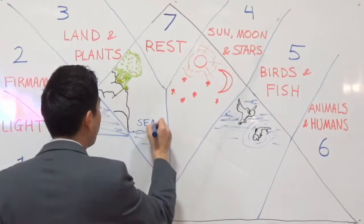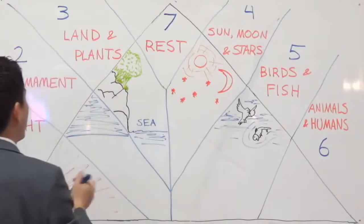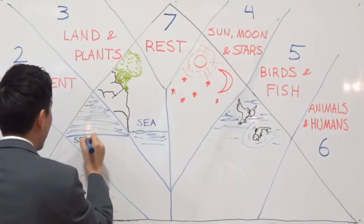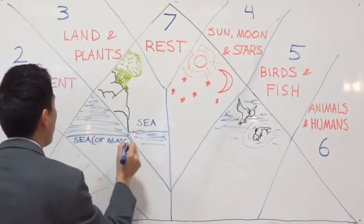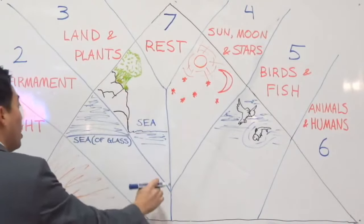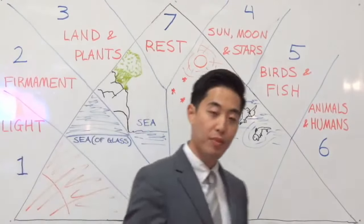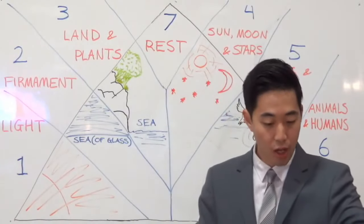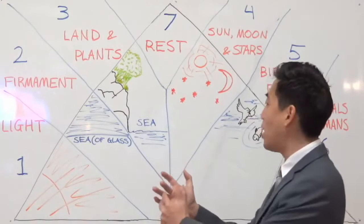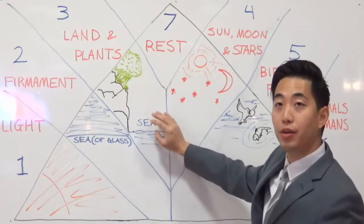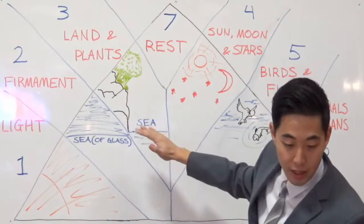The bottom part is called sea — this is where we see current oceans and seas around our world. Returning to verse 9, the waters under the heaven are gathered together unto one place, going toward one direction, so that the dry land can appear. That's what the verse says.